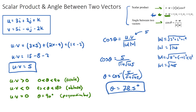As a quick summary: given two vectors, find the scalar product by multiplying the i, j and k components and adding them up. This number is used in the scalar product formula to find theta, the angle between two vectors — which is important because vectors represent real-world objects like boats, planes and trains, and finding the angle between them helps avoid collisions. We found the magnitudes of each vector and used the angle between two vectors equation to solve for 78.5 degrees. Hopefully you got a few tips — practice a few more questions and good luck.